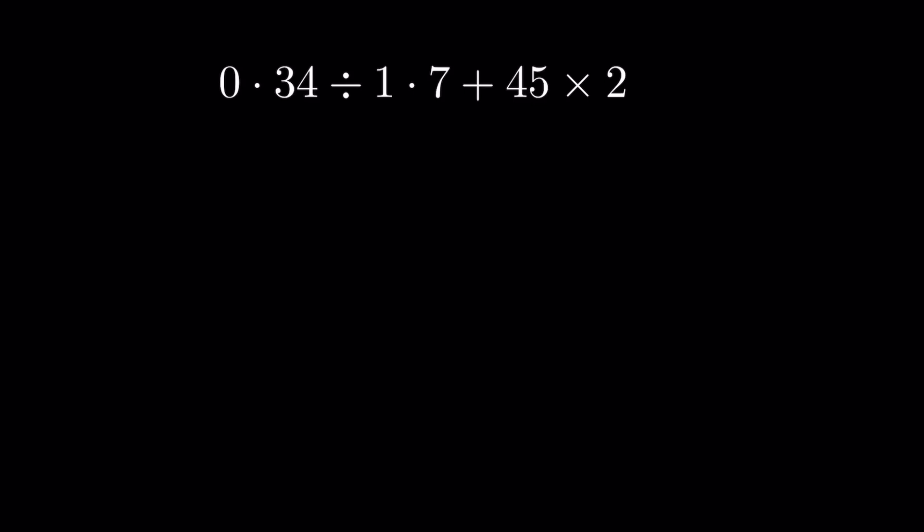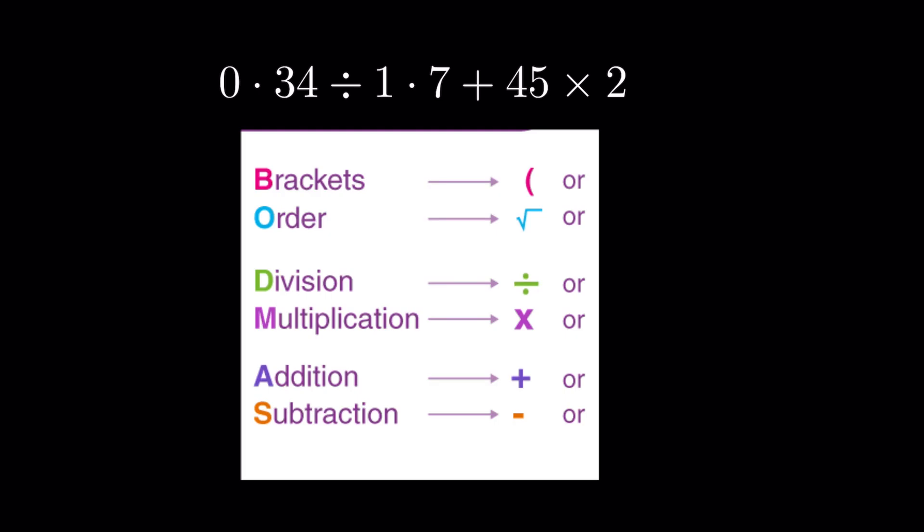0.34 divided by 1.7 plus 45 multiplied by 2. This is a question for order of operations, which means BODMAS. We will follow the rule of BODMAS where B stands for bracket, O for orders, D for division, M for multiplication, A for addition, and S for subtraction.